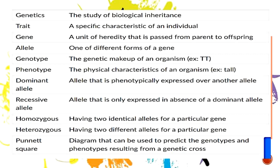Homozygous means having two identical alleles for a particular gene — for example, both letters should be the same, two capital letters. Heterozygous, on the other hand, is the opposite of homozygous — having two different alleles for a particular gene. For example, one big letter L and the other one is a small letter L. Punnett square is a diagram that can be used to predict the genotypes and phenotypes resulting from a genetic cross. I'll be showing you the Punnett square later in our slides.